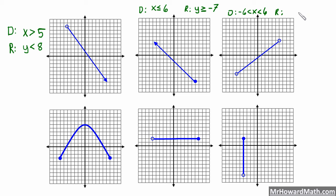For the range on this graph we have the same setup — Y goes in the center with inequality signs on either side. The minimum Y is at negative five and the maximum Y is at four. So our range is: negative five is less than Y, which is less than four. Reading from Y to the right: Y is less than four. Reading from Y to the left: Y is greater than negative five. If you're confused on reading inequality symbols, watch the inequality basics video.